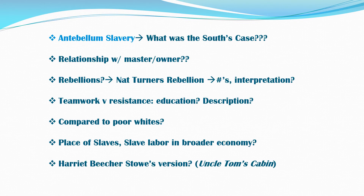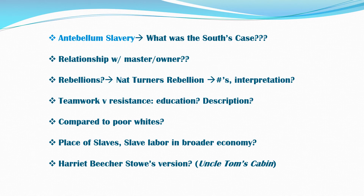Antebellum slavery: what was the South's case? That is your thesis statement. Antebellum slavery is part of the Jacksonian section on the online portion — I think it's part one of three. What was the South's case? You have to make an economic and a sociological argument — you can't make a moral argument. Slavery is bad; I know, I agree, I'm a fiery abolitionist. But take a look at the relationship between the master and the enslaved. Take a look at rebellions: what do they mean, what are the interpretations? Teamwork versus resistance. Education. Compare African-Americans at that time not to the master — that's probably not a good interpretation — but compare them to poor whites. There are many, many more poor whites than there were slave owners, as it turns out. That's a better, more meaningful comparison.